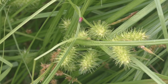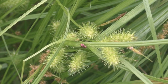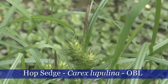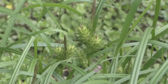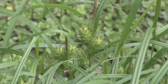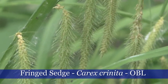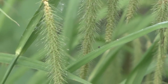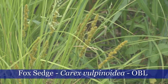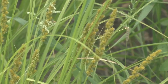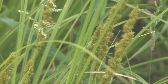Lurid sedges often droop under the weight of their spikes. Hop sedges look very similar to lurid sedge, but their stems are more upright. Their female spikes grow in pairs beneath the male spike. Fringed sedge gets its name from its long, drooping spikes. Fox sedges have many, many spikes growing close to their slender stems. You may also see bristles between the spikes, which look like skinny, wiry leaves.